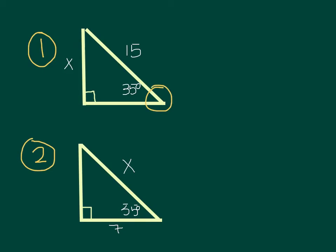The 15 is definitely the hypotenuse because it's the longest side across from the right angle. This side on the bottom is the adjacent because it helps make up that 35 degree angle, and the X is going to be my opposite.